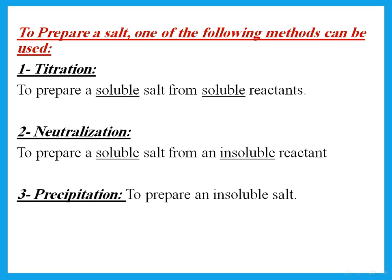When do we use any of these? We use titration if we're trying to prepare a soluble salt from soluble reactants. But if we're trying to make a soluble salt and one of the reactants is insoluble, then we use a method called neutralization. If we're trying to prepare an insoluble salt, then we use a method called precipitation.